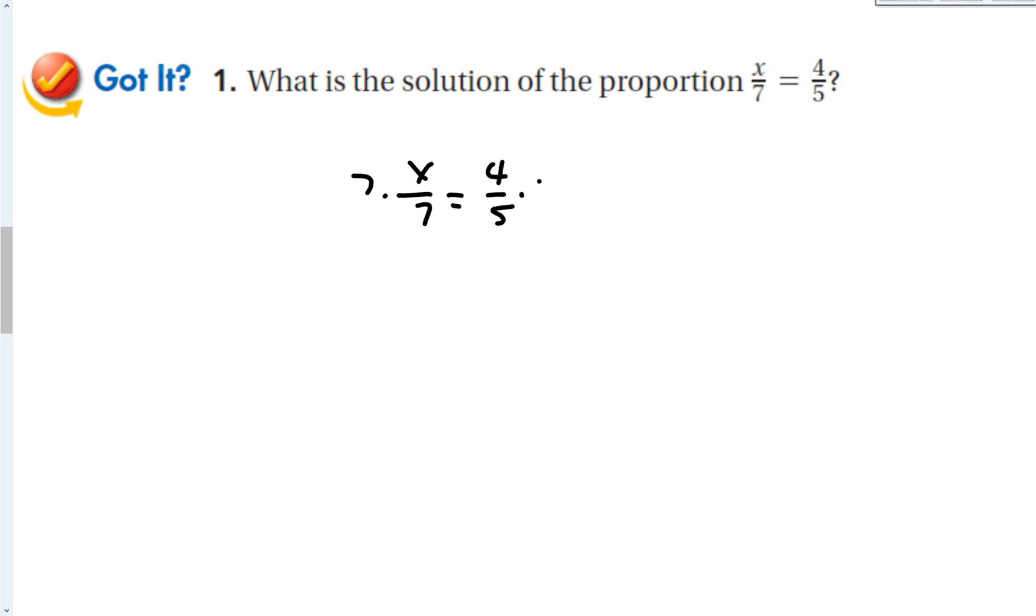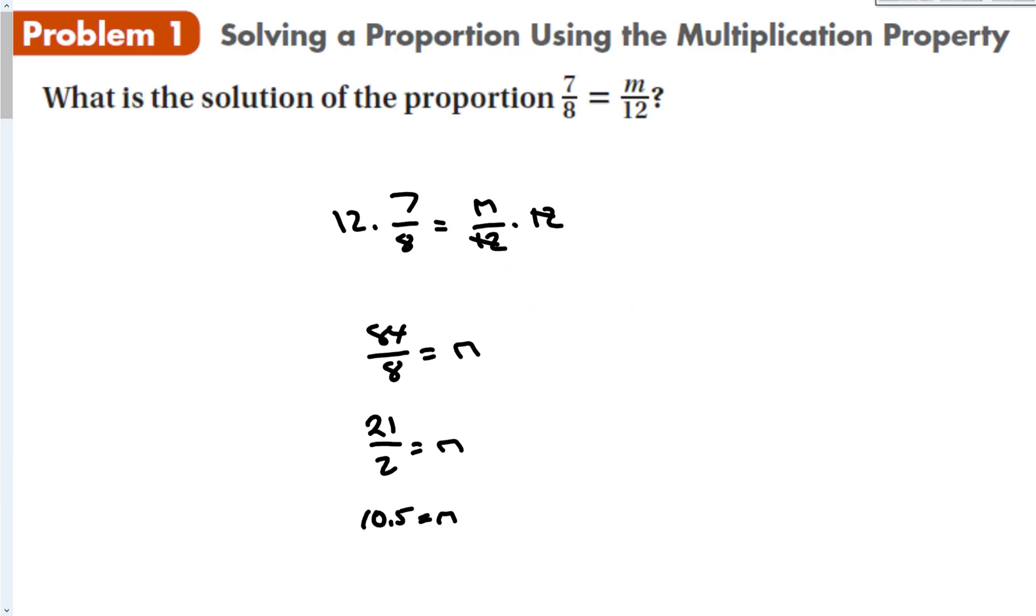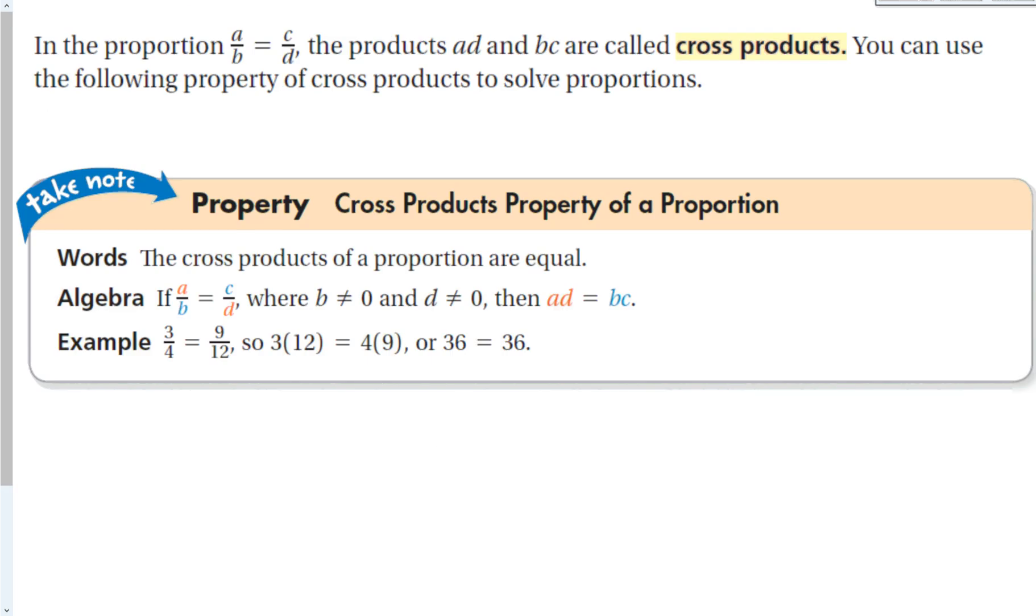I'm going to multiply both sides by 7. The 7s then cancel to get the x by itself. So that's 4 times 7, which is 28 over 5, which does not reduce. But if I wanted to, I could change it to a decimal with my calculator. So that usually works if, notice where the variable is. The variable is on the top. But it doesn't always have to be on the top.